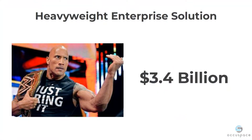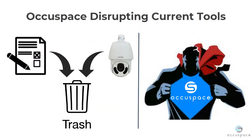What I learned from the vice chancellor is that our method for collecting occupancy data — which is now a patent-pending method — gives us the opportunity to be a heavyweight enterprise solution. $3.4 billion is in our market size; that's the current budget for construction going on at UCSD alone. With so much money at stake, it's vital that universities make sure all those dollars are being spent on the right projects, and universities are heavily investing in enterprise solutions to make better facility decisions.